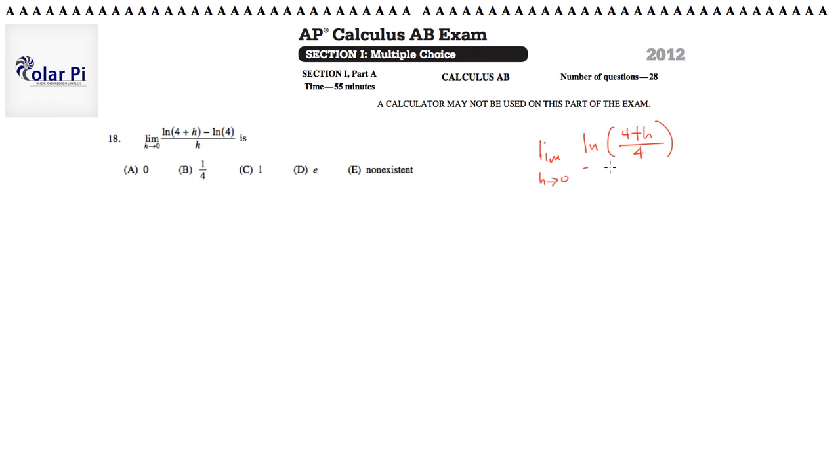And then you have all of this divided by H. And so when you plug in 0, you're going to get LN of 4 over 4 divided by 0. And LN of 4 over 4 is LN of 1, which we know is 0. So then you would have gotten 0 over 0 because LN of 1 is 0. And maybe because you knew that this is an indeterminate form, you'd try to use L'Hopital's rule if you're in BC calculus.